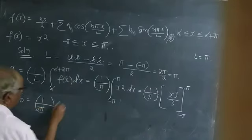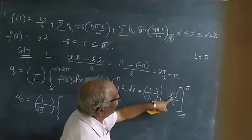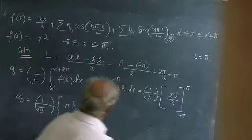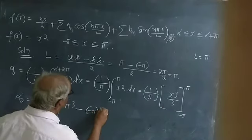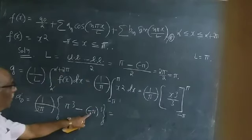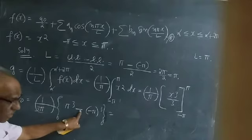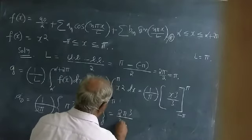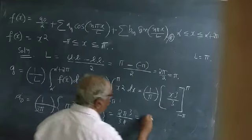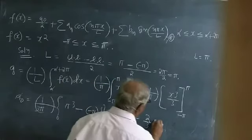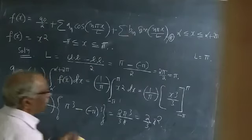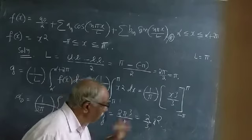We can take the 3 outside: a₀ = (1/π) × (1/3) × [x³] from -π to +π. Substituting the upper limit π: π³. Substituting the lower limit -π: (-π)³ = -π³. So we get (1/3π) × (π³ - (-π³)) = (1/3π) × 2π³ = 2π²/3. Therefore a₀ = 2π²/3.